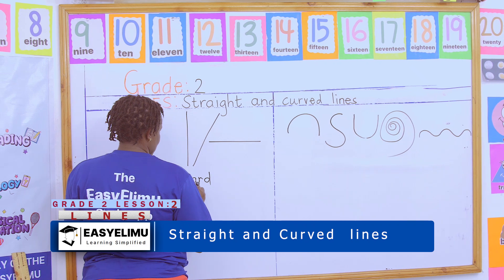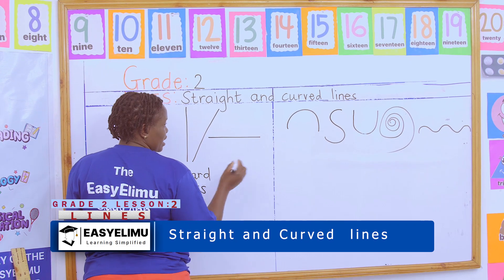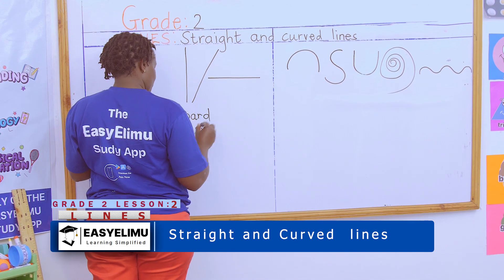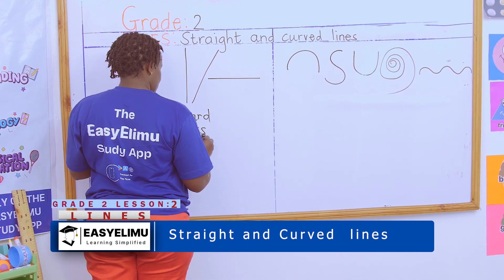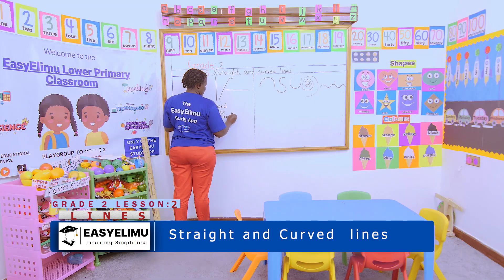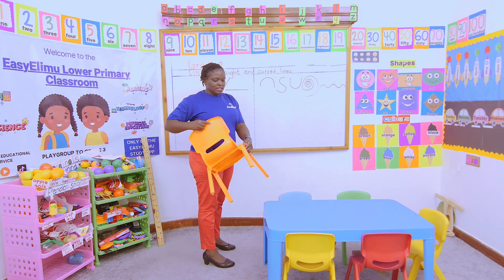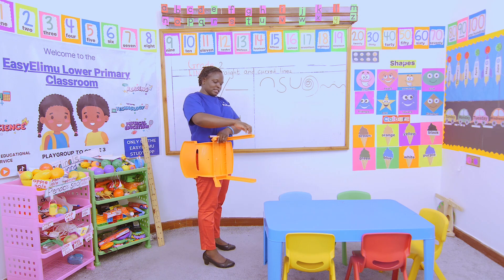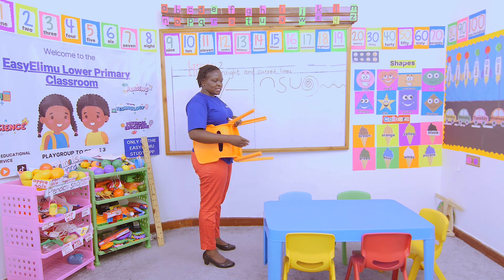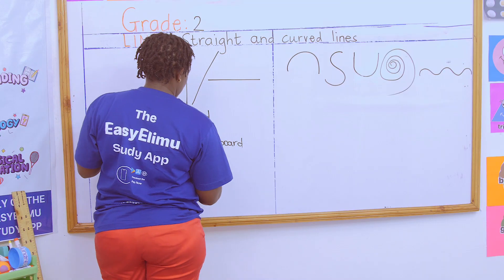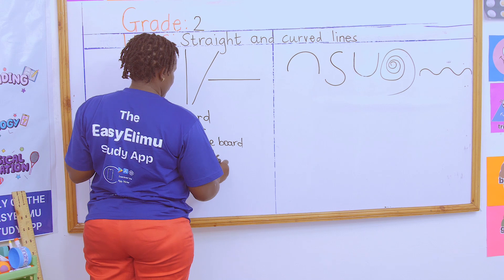So we can say our board has straight lines, our class has straight lines. Our notice board still has straight lines. Our table has straight lines. Even the chairs — this is a straight line, this is a straight line, this is a straight line. So even our chairs have straight lines.